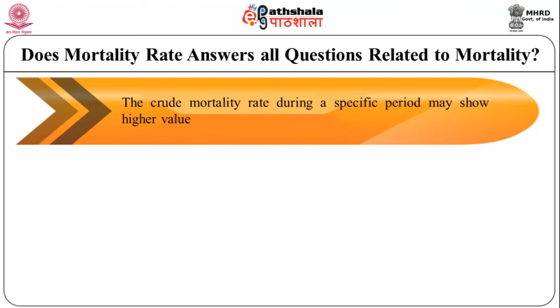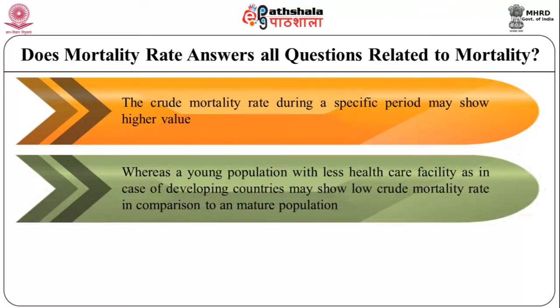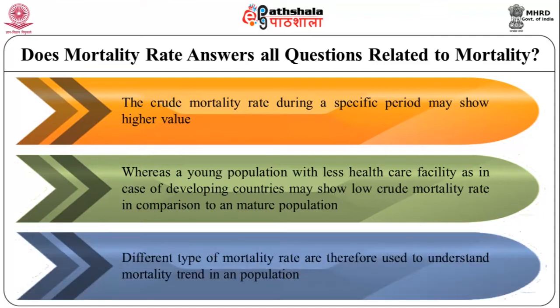We have discussed death rate in crude form — that is the number of deaths per year per thousand people. But this simple expression of death rate can be misleading if we consider it without taking age-specific and other reasons of mortality into account. A population with good healthcare facilities but a large proportion of elderly individuals, as in developed countries, may show a higher crude mortality rate, whereas a young population with less healthcare, as in developing countries, may show a lower crude mortality rate. Therefore, different types of mortality rates are used to understand mortality trends in a population.